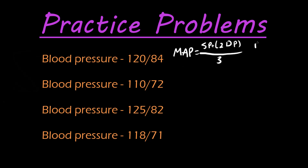For the first one, we have 120 plus two times the diastolic, so 84, twice, divided by three. That's going to give us a mean arterial pressure of 96 millimeters of mercury.